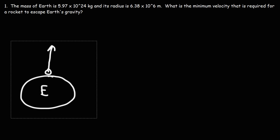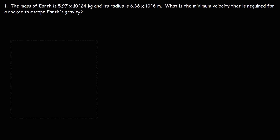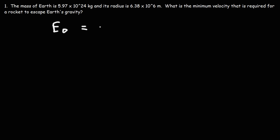In order to calculate it, we need to use conservation of energy. The initial total energy must be equal to the final total energy. The two types of energies we're going to be dealing with are kinetic and potential. So we have initial kinetic energy and initial potential energy.